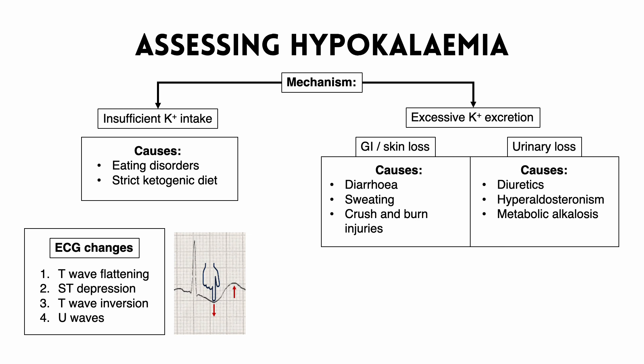The second ECG change is ST depression — the ST segment connects the end of the QRS complex to the start of the T wave, and in hypokalemia that line can become depressed below baseline. Third, we can get T wave inversion, where instead of flattening, a finger-like appearance pushes the T wave downwards underneath the baseline. Then in very severe hypokalemia we can get U waves — an additional positive deflection not normally seen on an ECG which occurs after the T wave.